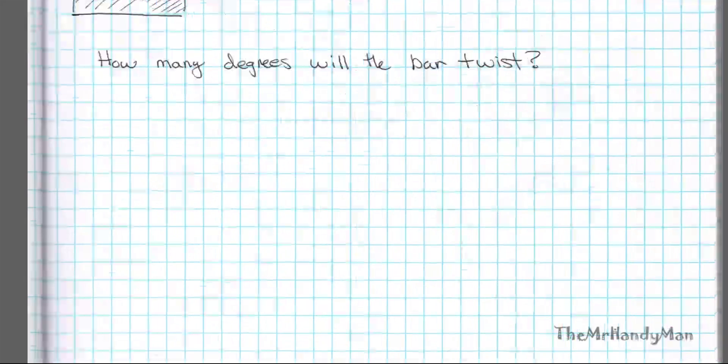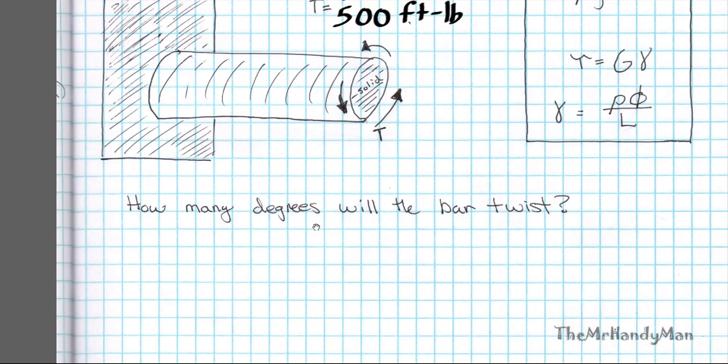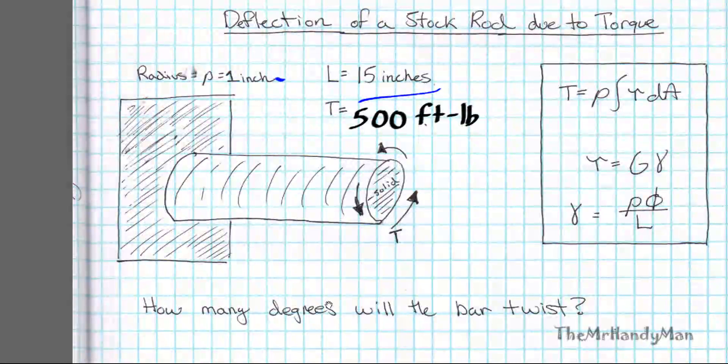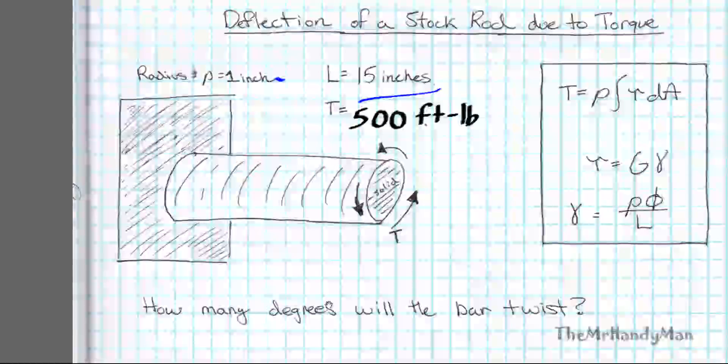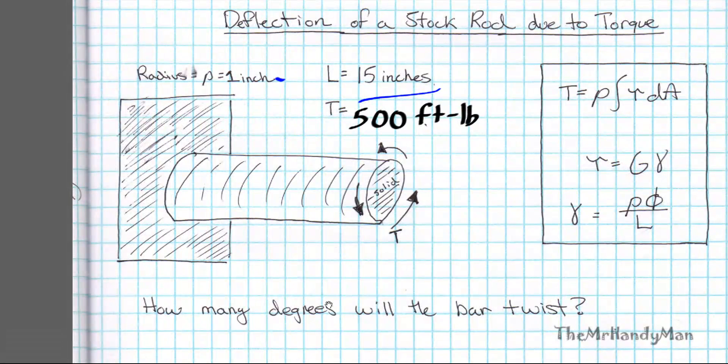And so let me describe the situation. What we have here is a rod that looks like a rod that's sticking straight out of the wall and there's an applied torque on it. It's solid, it's not hollow, it's not like a hollow pipe or anything like that.